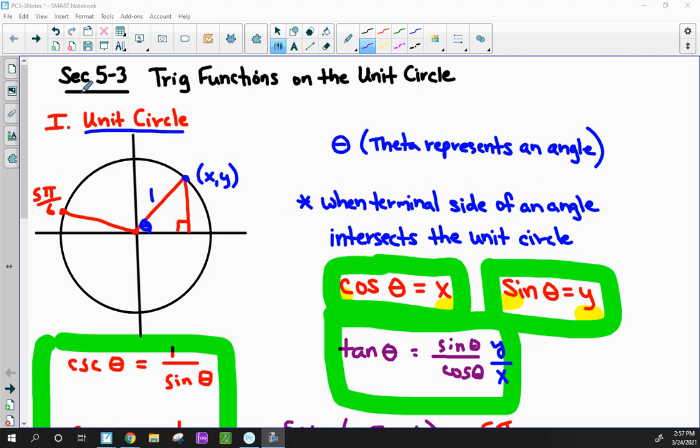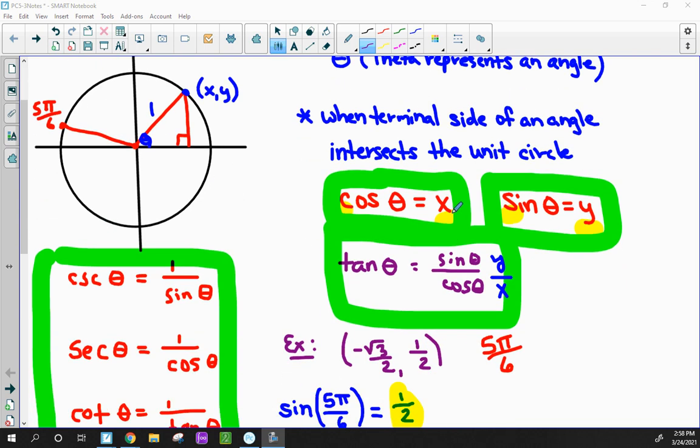Precal. We are still on section 5.3 learning about trig functions on the unit circle. First, the learning target was to make sure you understand the unit circle's parts - all the degrees, the radians, and the ordered pairs. Make sure you memorize those. Secondly, we looked at the trig table and how to apply it to the unit circle.